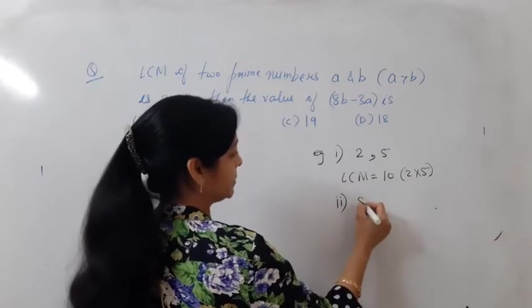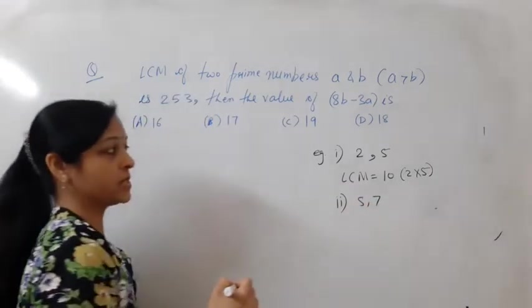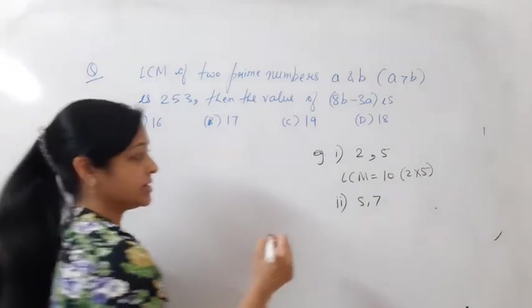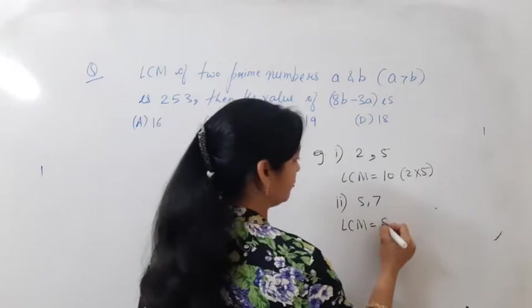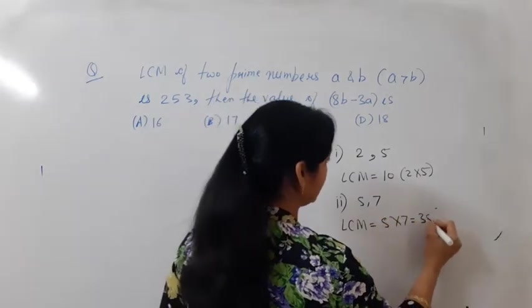Take one more example. Suppose two prime numbers are 5 and 7. Since they are prime numbers, the LCM will be directly 5 into 7, that is 35.